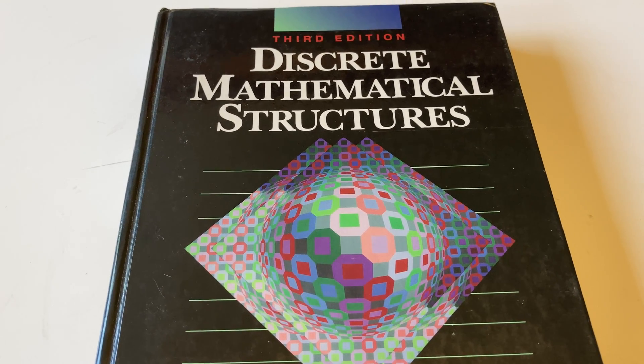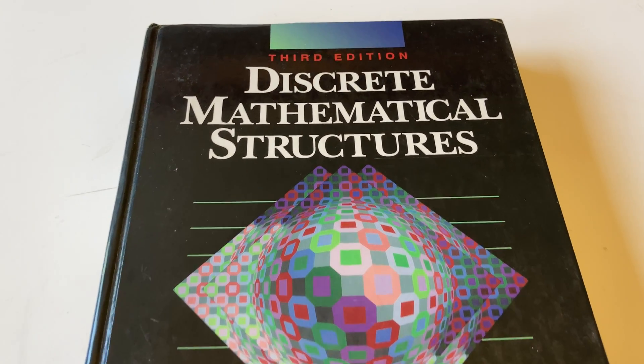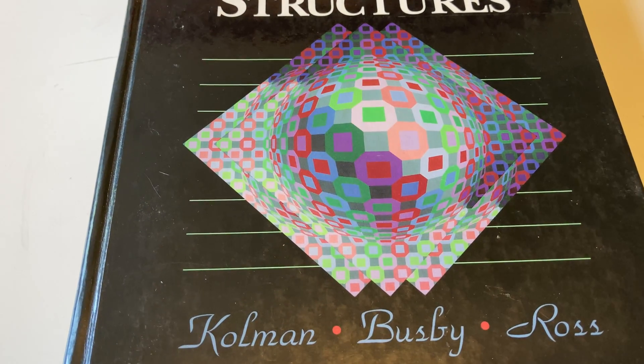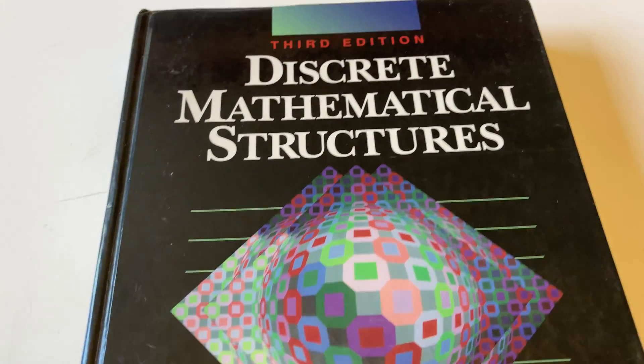Hi everyone, in this video we're going to take a close look at this book. This book is called Discrete Mathematical Structures and it's by Coleman, Busby, and Ross. And this is the third edition.